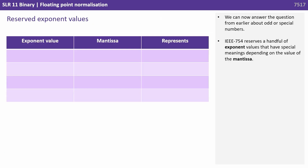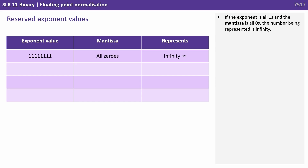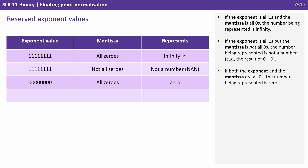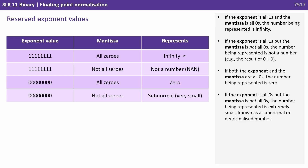We can now answer the question about odd or special numbers. IEEE 754 reserves a handful of exponent values with special meanings depending on the mantissa. If the exponent is all ones and the mantissa is all zeros, the number is treated as infinity. If the exponent is all ones but the mantissa is not all zeros, it's not a number — for example the result of zero divided by zero. If both the exponent and the mantissa are all zeros, the number is zero. If the exponent is all zeros but the mantissa is not all zeros, the number is extremely small — known as a subnormal or denormalised number.